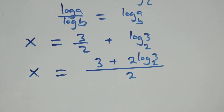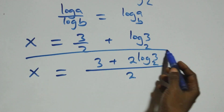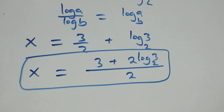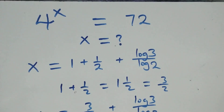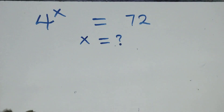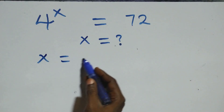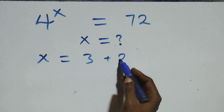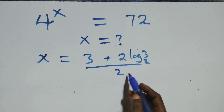We can bring this together as one fraction: x equals to 3 plus 2 log 3 base 2, all over 2. Then let's check if this satisfies the given problem — that is, we substitute the value of x, which is x equals to 3 plus 2 log 3 base 2, all over 2.